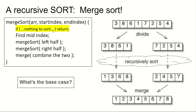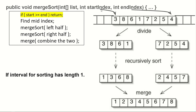The base case is really about the interval we're trying to sort, not the array length. If start index equals end index, there's exactly one thing to sort — that's a base case. If end index is one larger than start index, there are two things and we can still split. So the base case is: if start equals end, exit because there's just one thing, or if start is greater than end, that means zero things to sort.